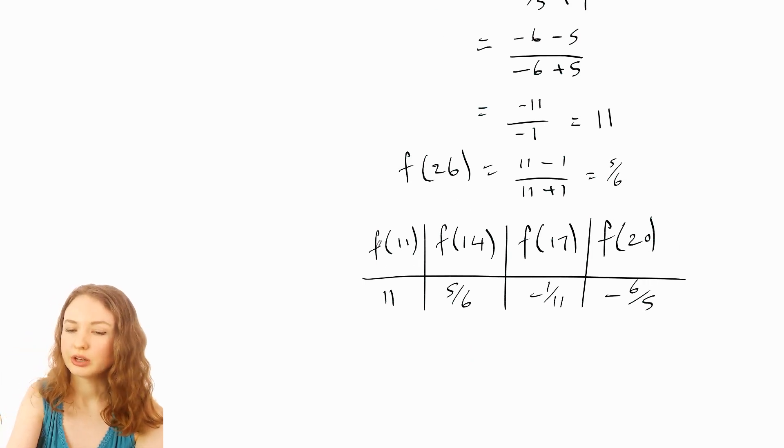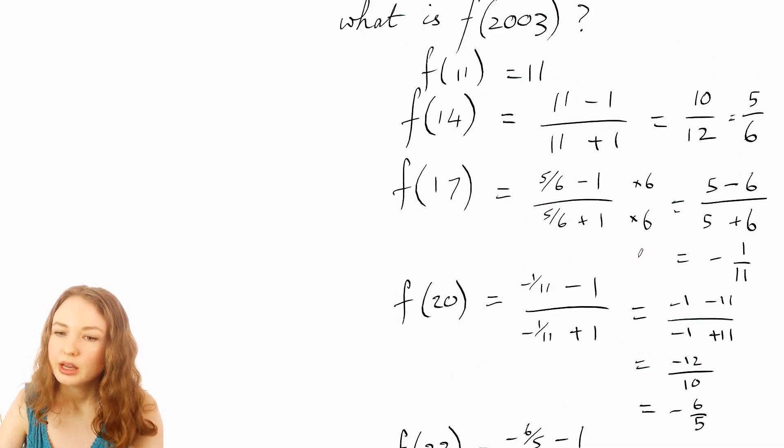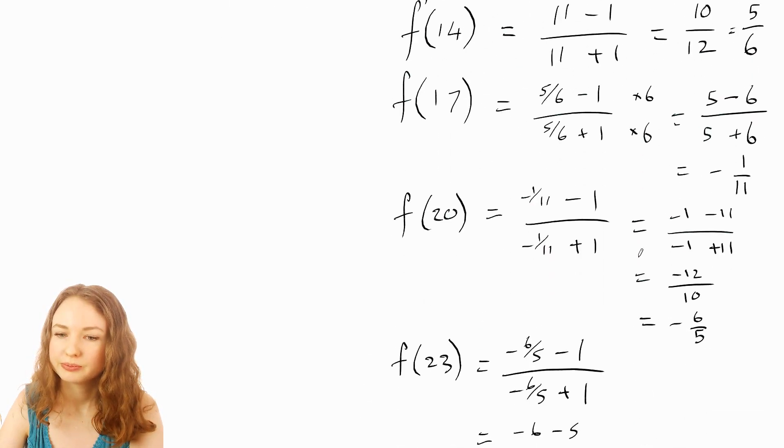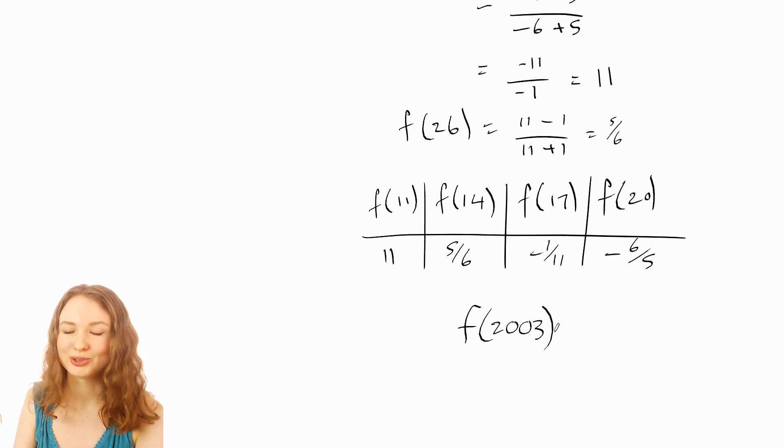And that's just going to keep repeating. So this is also f of 23, f of 26, f of 29, f of 32 and so on. So we have to work out f of 2003. So here's where you might want to stop and brainstorm strategies for how to do that.